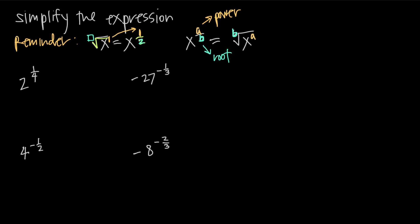Let's look at a couple of examples. We have 2 to the 1/4 power. We know that 1 is the power and 4 is the root. So we write our radical, take the numerator and make that the power on the base — this is going to be 2 to the 1st inside our radical. The 4 comes out and becomes the 4th root of 2 to the 1st. Of course, writing anything to the 1st power is redundant, so we just say the 4th root of 2.